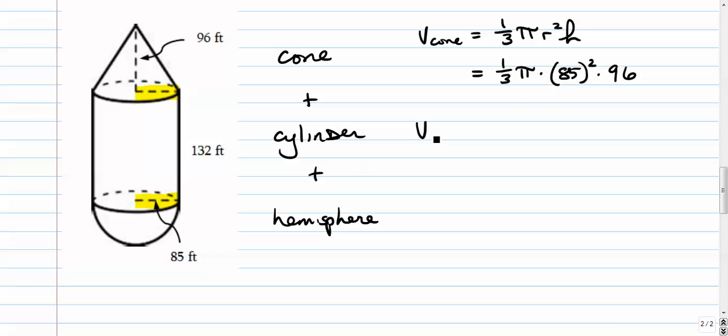We're going to add that to the volume of the cylinder. Volume of the cylinder is pi r squared times h. Radius is the same, of course. Height's not the same though. The height in this cylinder is 132. In other words, it's quite a bit taller than the cone that sits on top of it.